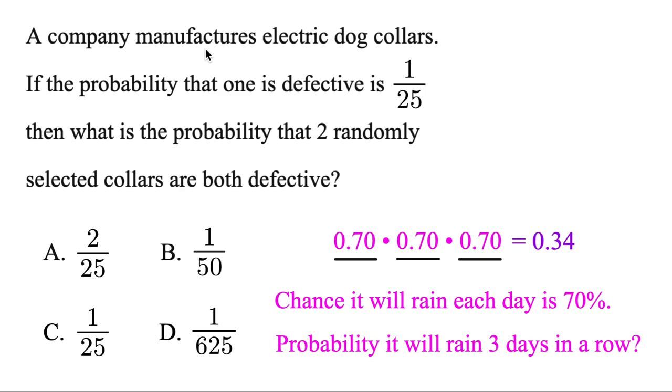Now for this one, a company manufactures electric dog collars. If the probability that one is defective is 1 over 25, then what is the probability that two randomly selected collars are both defective? Well, we know we're choosing two collars, so let's put two spots here. But we want to know if they're defective. And each is going to be defective 1 out of 25 times.